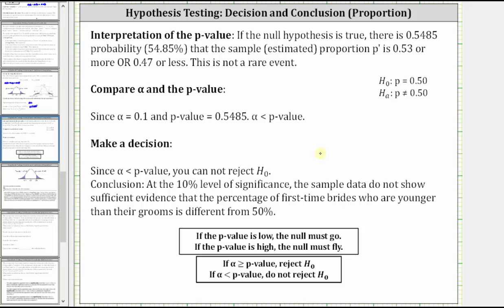So again, in conclusion, at a 10% level of significance, the sample data do not show sufficient evidence that the percentage of first-time brides who are younger than their grooms is different from 50%. Again, this is because we are not rejecting the null hypothesis, which is P equals 0.50.